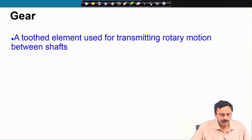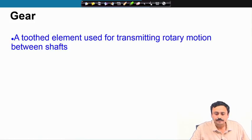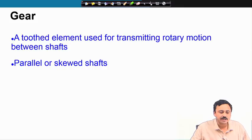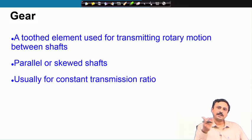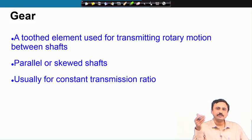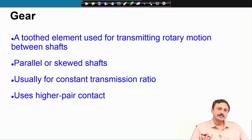What is a gear? A gear is a tooth element used for transmitting rotary motion between shafts. Shafts can be parallel or skewed. Usually we use gears for constant transmission ratio, but there are very special applications where gears can have periodically varying transmission ratios. A gear uses higher pair contact, which means that these are either line contacts or point contacts.